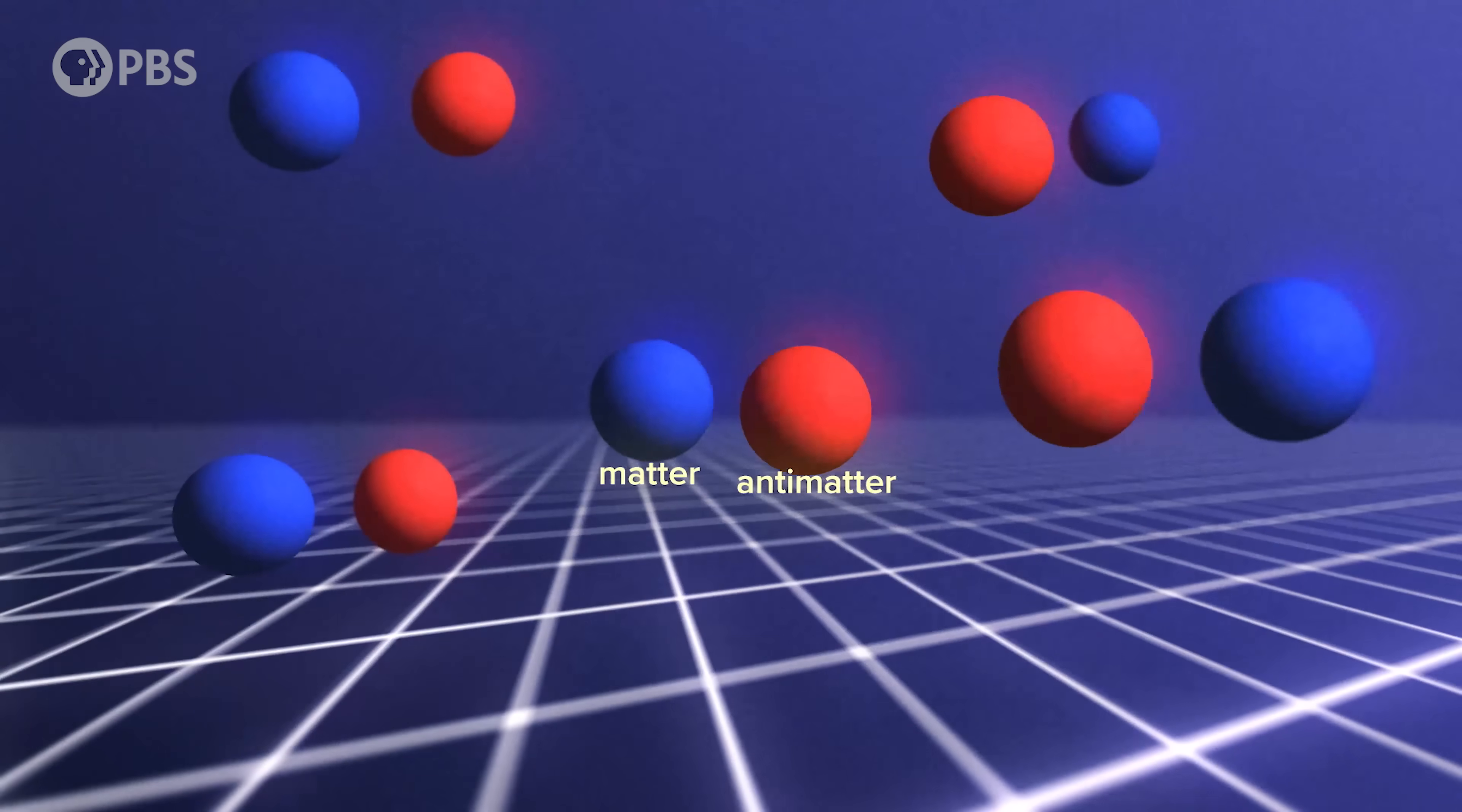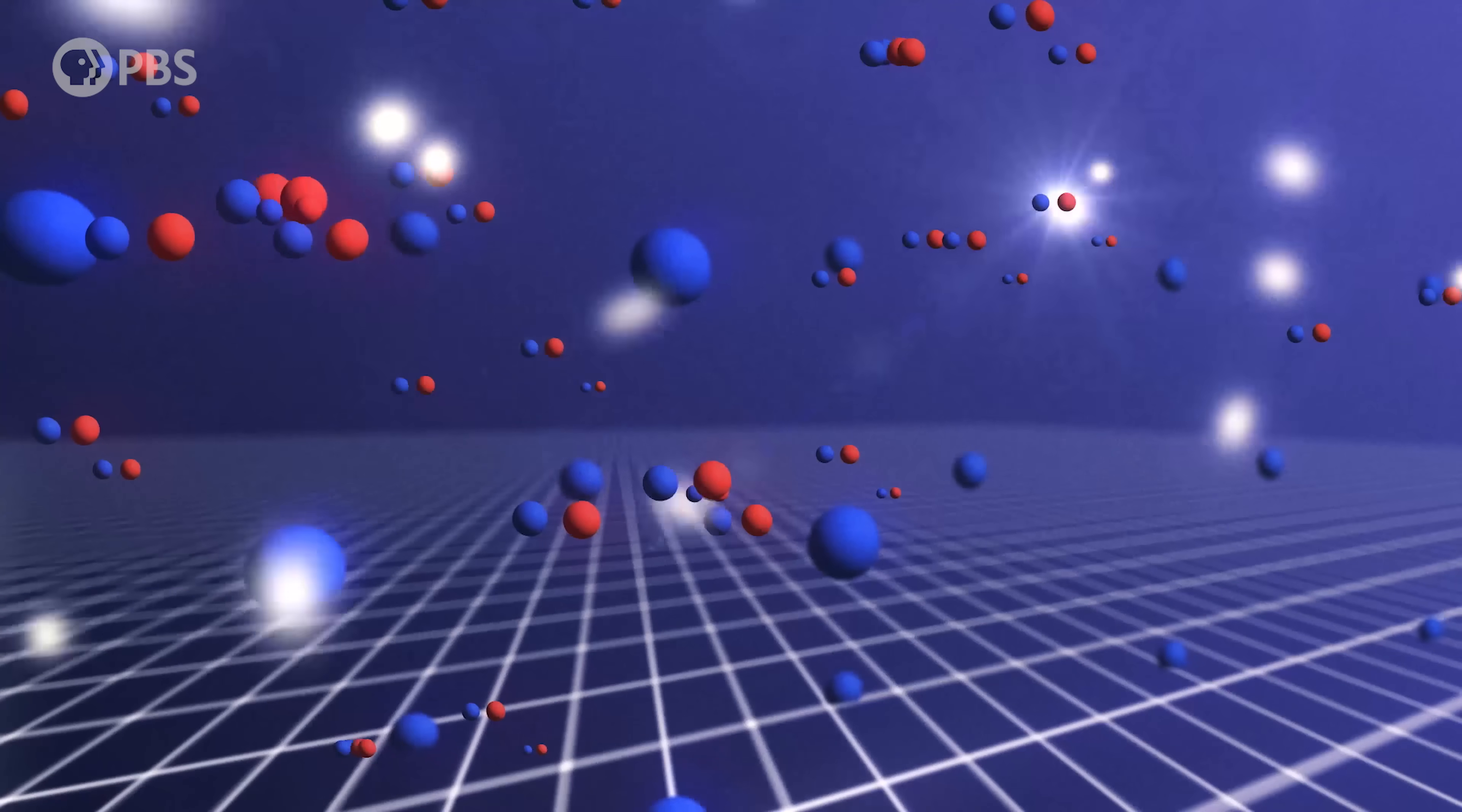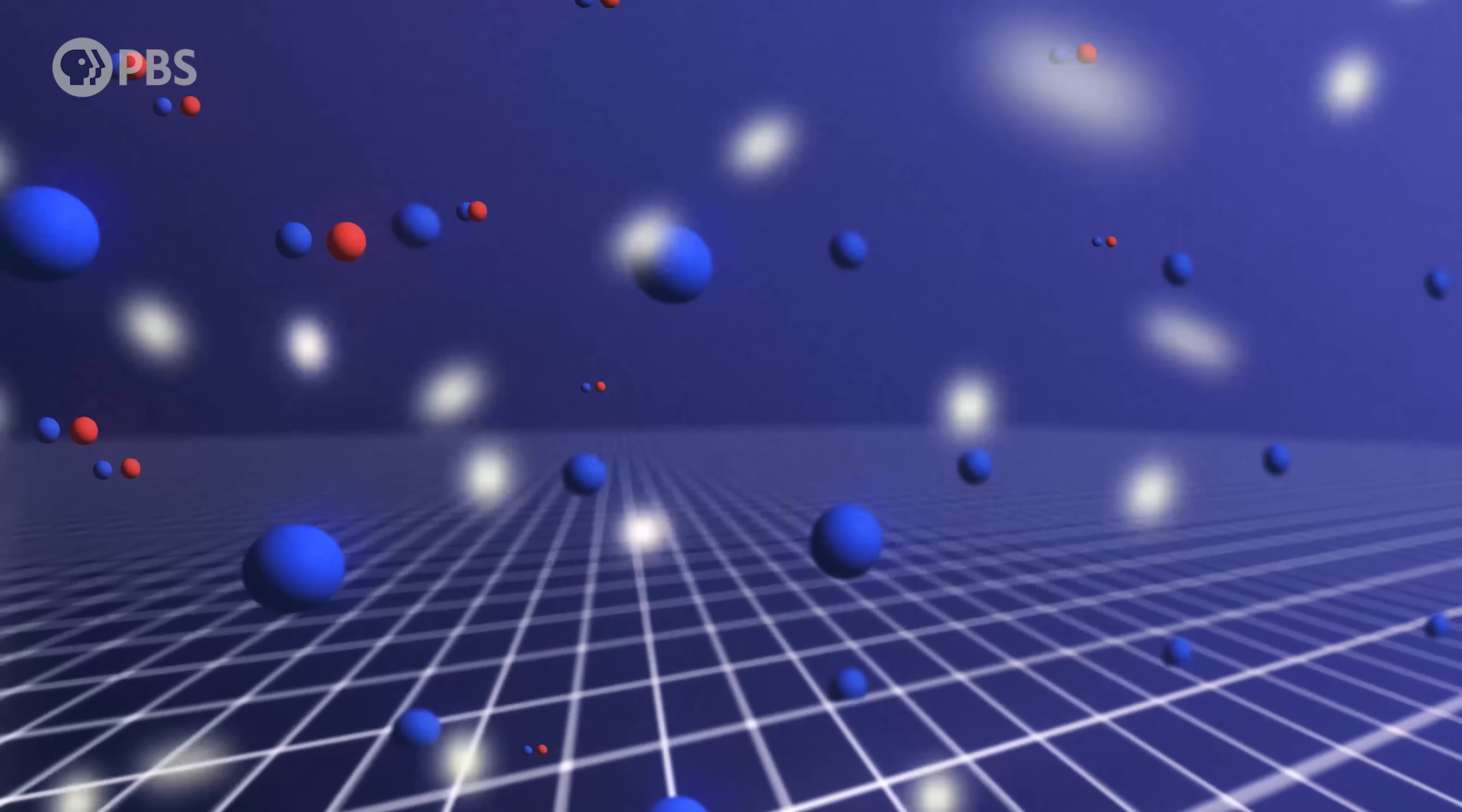Our best understanding of particle physics tells us that matter and antimatter should have been created in equal quantities in the early universe, and so should have perfectly annihilated each other, leaving a universe of only photons.